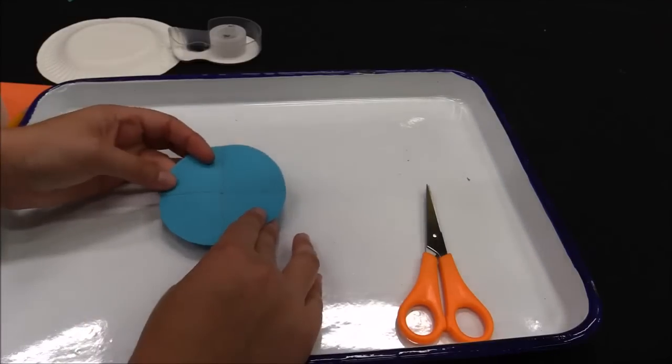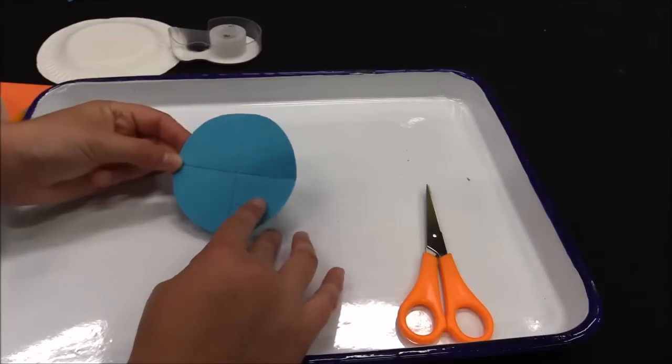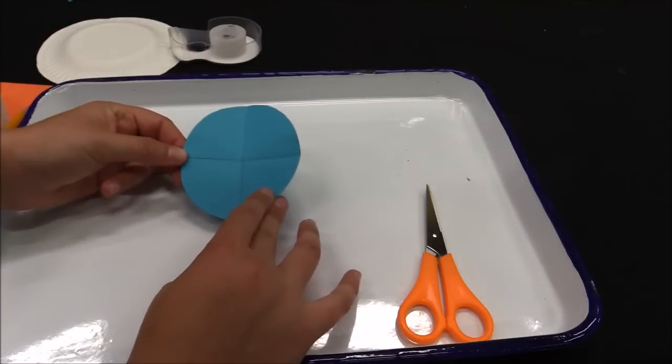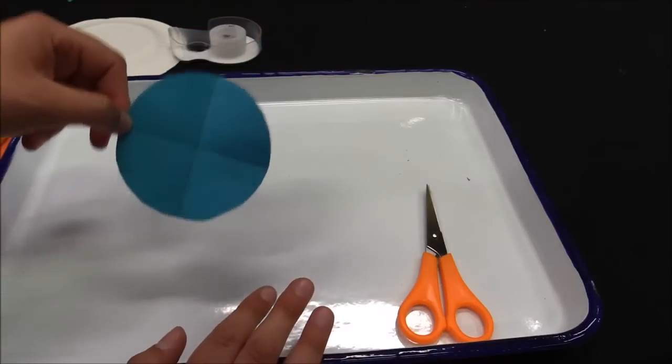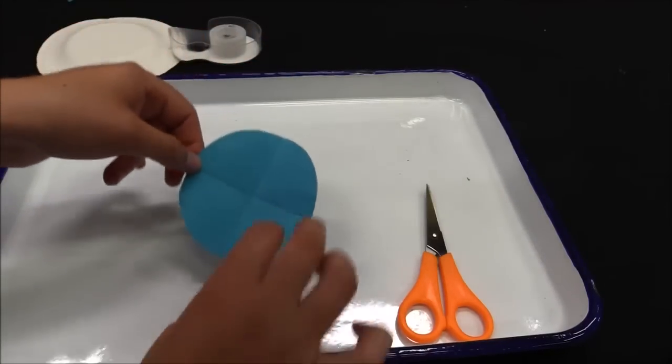Don't make the center of your circle too big but do mark it because it's gonna help us with some of our later folds. So now we're trying to divide this circle into twelve equal parts. So we have four but we need to draw a couple more lines. So you're gonna need to make some very careful folds to make this happen.